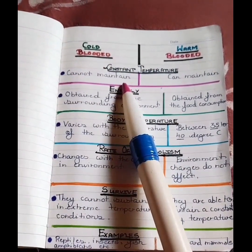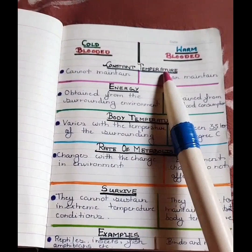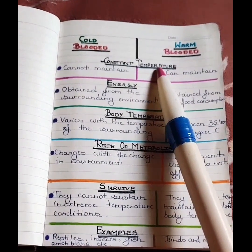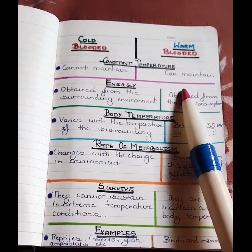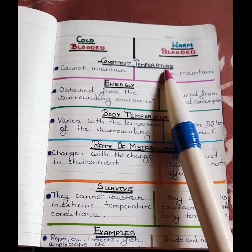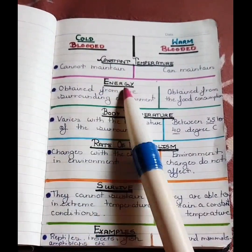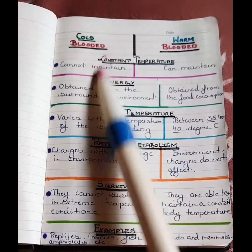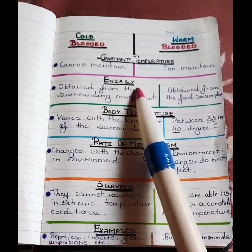Now the next point is energy. Cold-blooded obtain energy from the surrounding environment, whereas warm-blooded obtain energy from the food consumption.